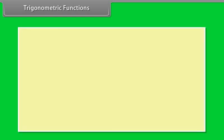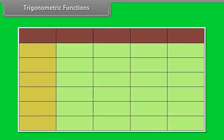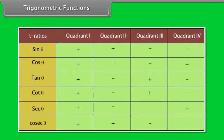In the table given below, the signs of all the trigonometric ratios are given in each quadrant.